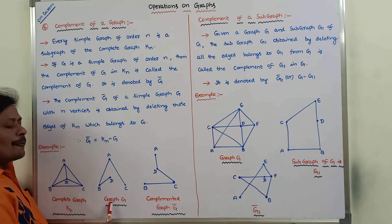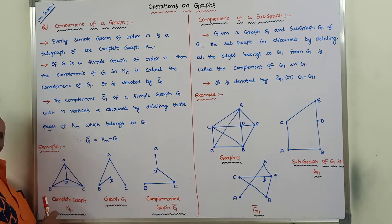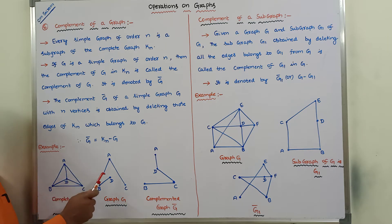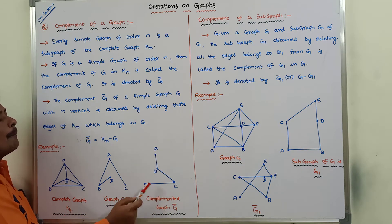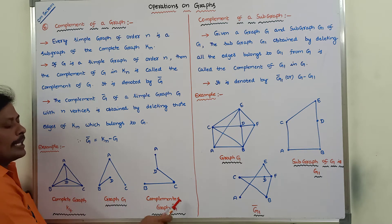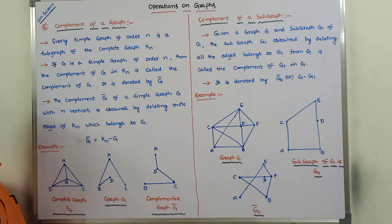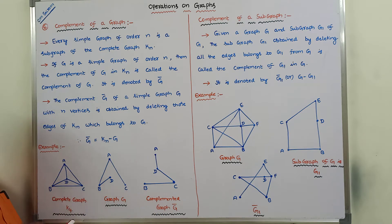Now we have to find out the complement of this graph. How are we finding out the complement? Whatever edges are present in graph G are removed from complete graph K4. Whatever remaining edges are present in K4 after deleting the edges of G — please observe carefully.